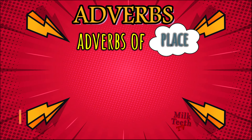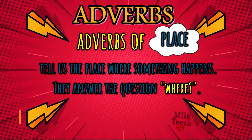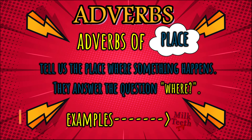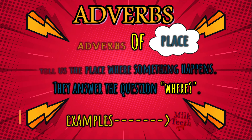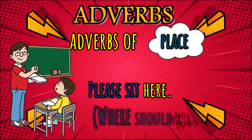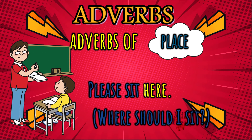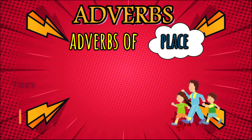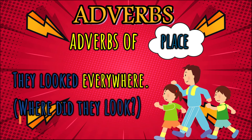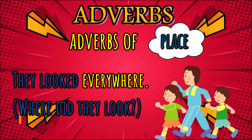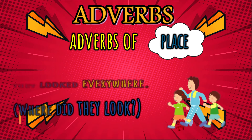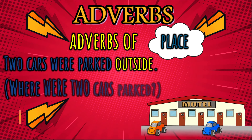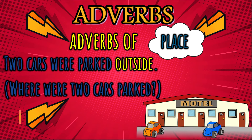Adverbs of place tell us the place where something happens. They answer the question 'where.' For example: where should I sit? Here — so 'here' is an adverb of place. They looked everywhere — where did they look? Everywhere. So 'everywhere' is an adverb of place.